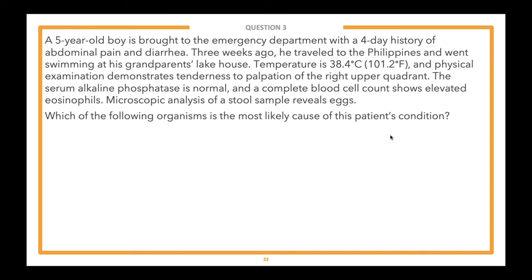A 5-year-old boy is brought to the emergency department with a four-day history of abdominal pain and diarrhea. Three weeks ago, he traveled to the Philippines and went swimming at his grandparents' lake house. Temperature is 38.4°C (101.2°F). Physical examination demonstrates tenderness to palpation of the right upper quadrant. Serum alkaline phosphatase is normal, and a CBC shows elevated eosinophils. Microscopic analysis of a stool sample reveals eggs. Which of the following organisms is the most likely cause?